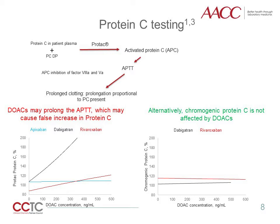While the clot-based protein C assay described here is the most common, there are other reagent platforms using prothrombin time or Russell's Viper Venom time reagents. The DOAC effect on these methods has not been adequately described, but may be vetted with external quality assurance samples provided by CAP or ECAT. Immunologic methods for protein C are not affected by DOAC presence.